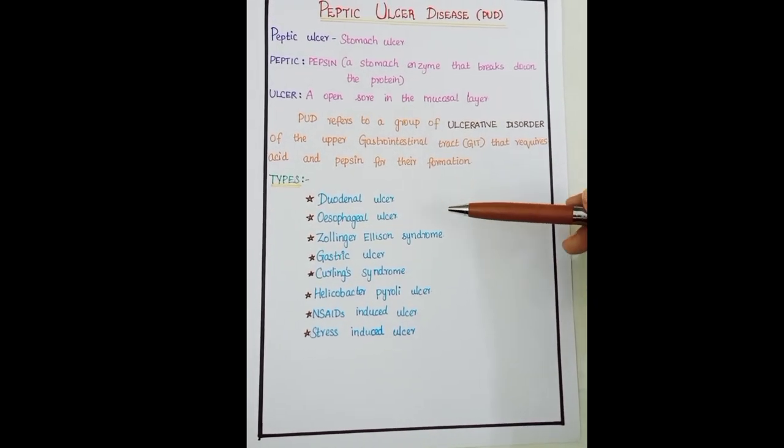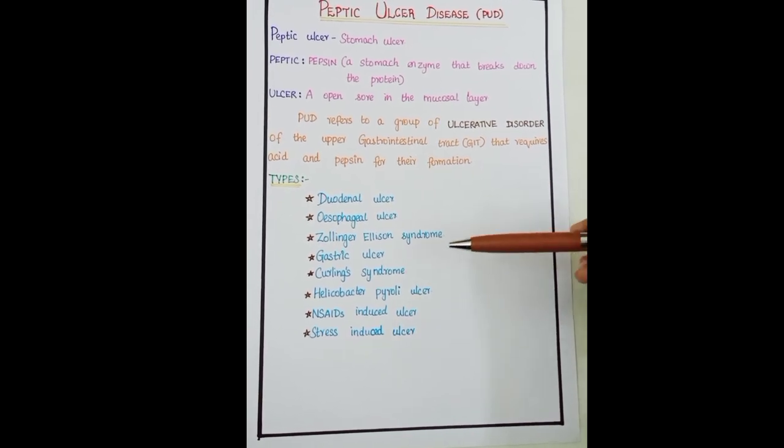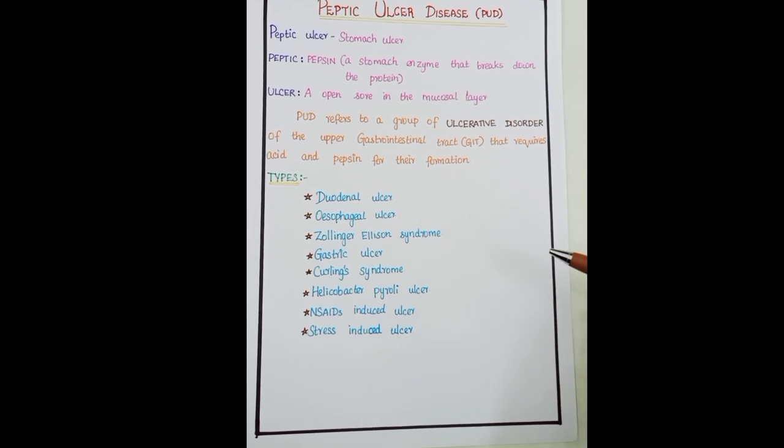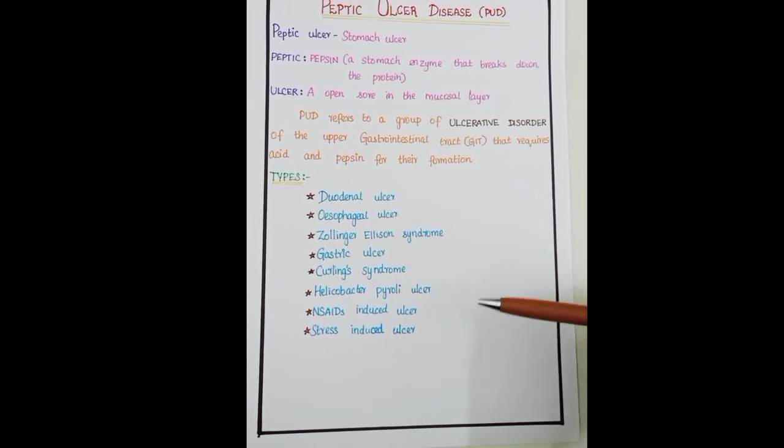The types of peptic ulcer disease are duodenal ulcer, esophageal ulcer, Zollinger-Ellison syndrome, gastric ulcer, Curling syndrome, Helicobacter pylori ulcer which is the main cause of most peptic ulcers, NSAIDs-induced ulcer, and stress-induced ulcer.